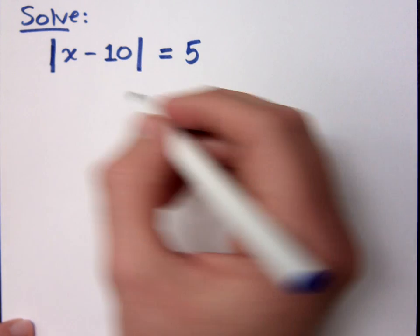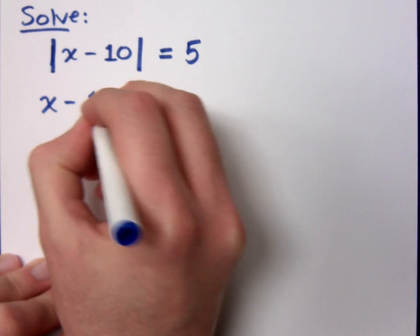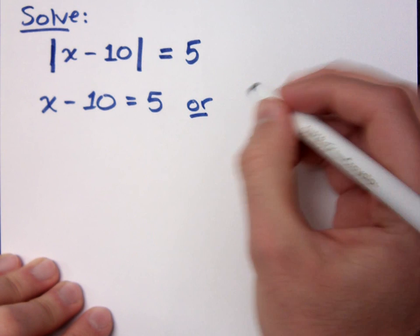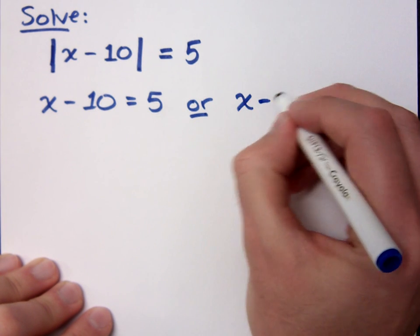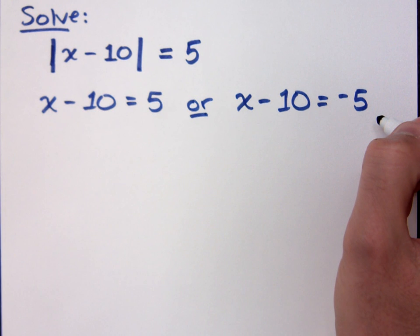So in order for an absolute value to equal 5, that means that the stuff on the inside must equal 5 or the stuff on the inside has to equal negative 5, right? Does that make sense?